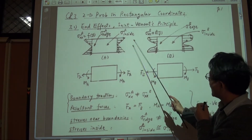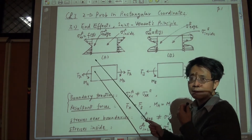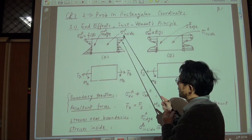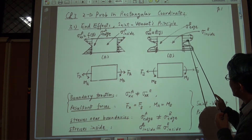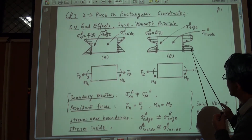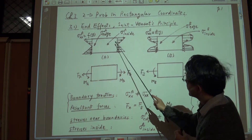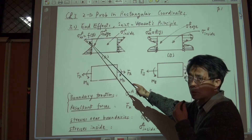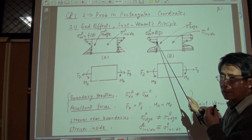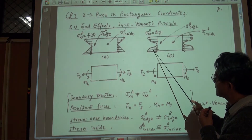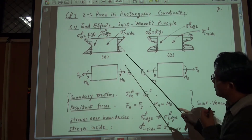Consider two plates. These two plates are exactly the same — same material, same size, same shape — but they are subjected to different loadings. One has a sharp triangular loading; the other has a distributed load that is slightly curved. So obviously the loading is different. The upper part of this plate is subject to tensile load, and the lower part to compressive load, and similarly for the other plate.